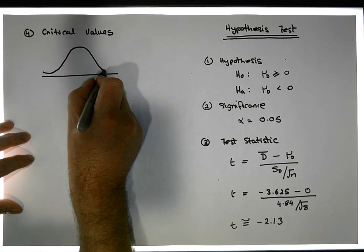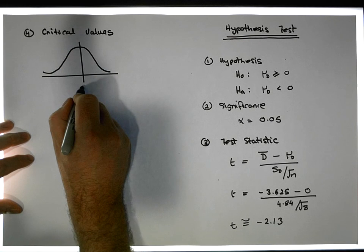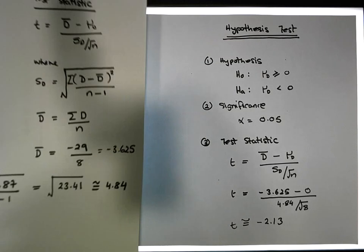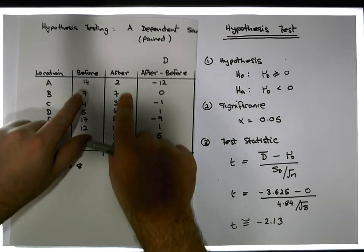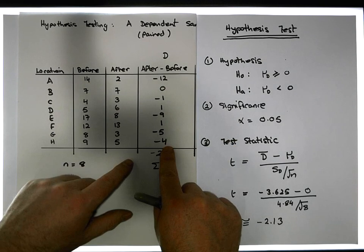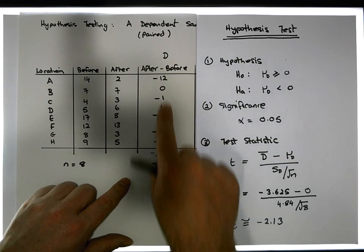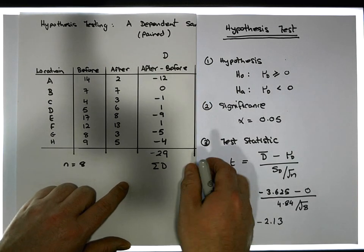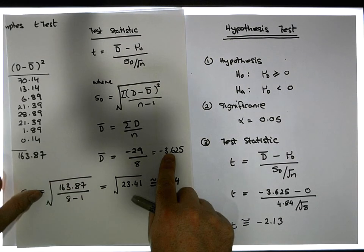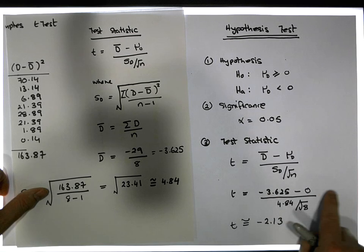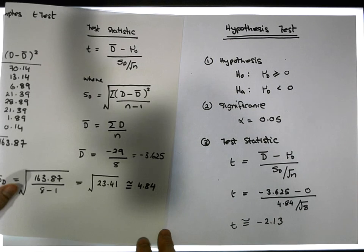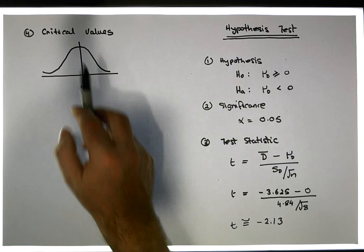From a distribution perspective, here's our t-distribution centered on zero. If there's no difference between the before and after measures, the differences should all be zero, so the average difference is zero, giving us a test statistic of zero.